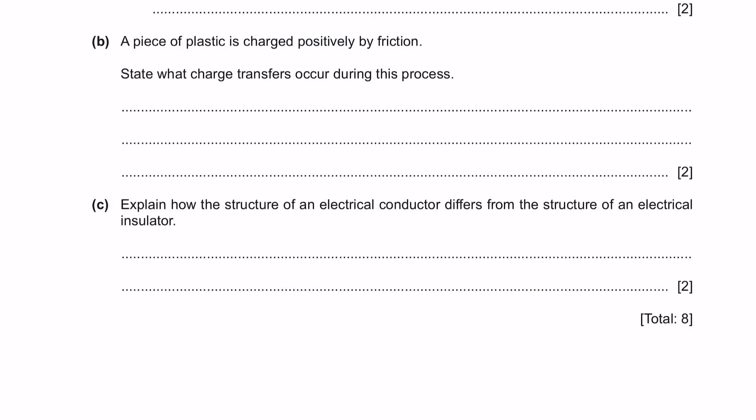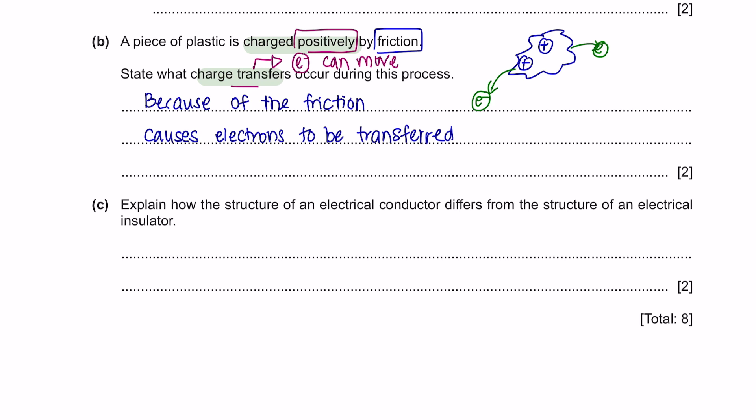Question B. A piece of plastic is charged positively by friction. State what charge transfers occur during this process. When discussing charge transfers, you have to remember that only electron ions, which are the negative ions, can move. Initially, the piece of plastic had equal amounts of positive and negative ions. If the piece of plastic becomes positive, it only means that there are no longer electrons in the plastic. This is because the electrons have been transferred during the friction. You can explain this by saying that the plastic becomes positively charged because of the frictional force which causes the electrons to be transferred out from the cloth.